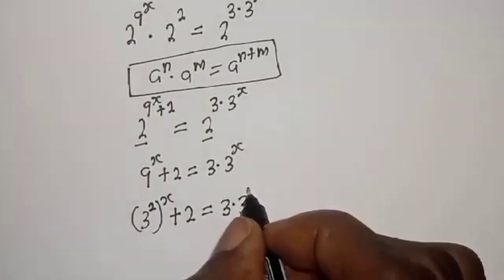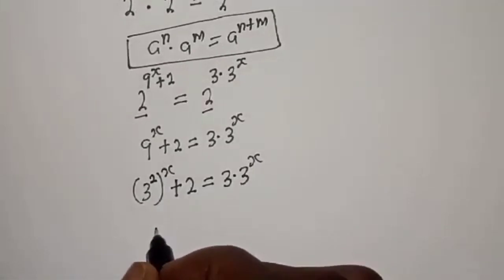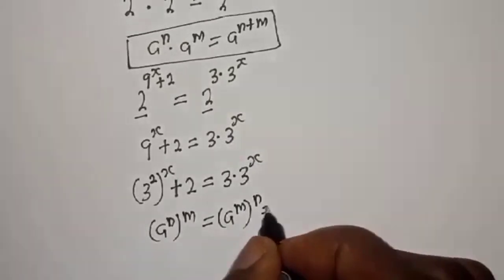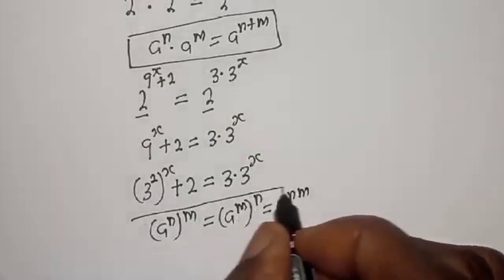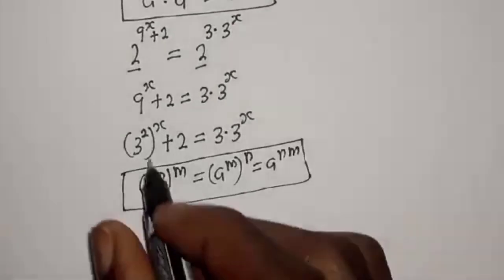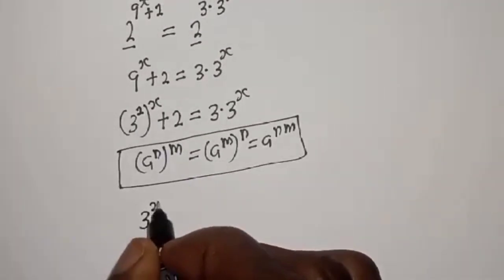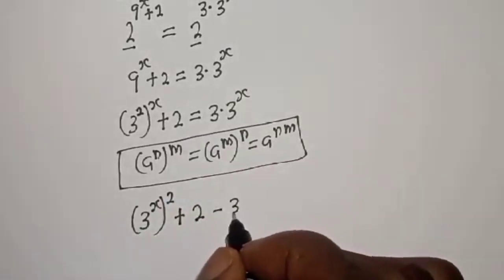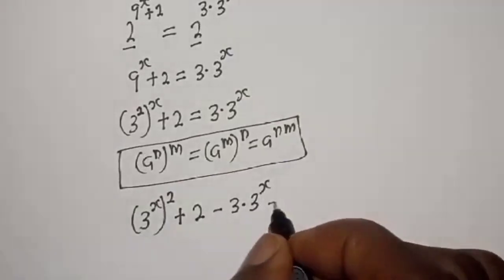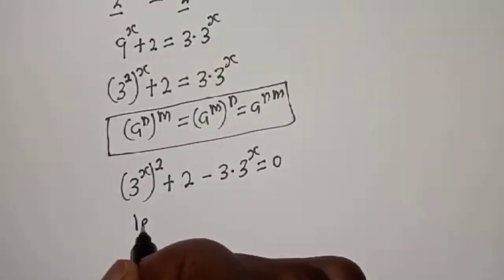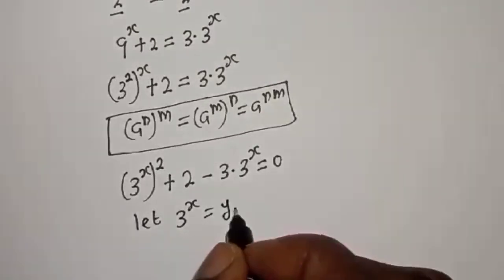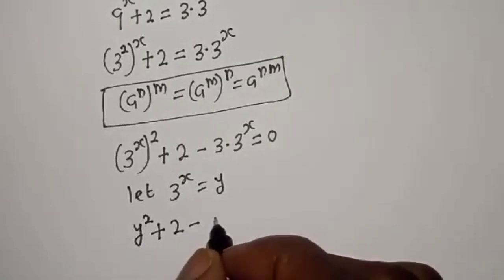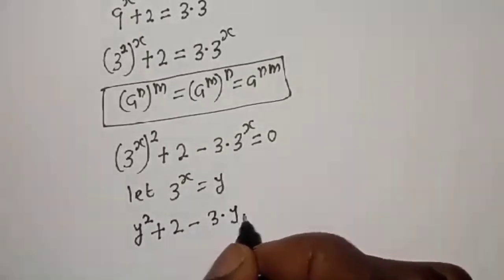Take note that if you have a raised to power n, to the power m, this is equal to a raised to power n times m. So 3 raised to power 2 raised to power s can be written as 3 raised to power s squared. So 3 raised to power s squared plus 2, minus 3 multiplied by 3 raised to power s, is equal to 0. Now let 3 raised to power s equal y, then substituting, we have y squared plus 2 minus 3y is equal to 0.